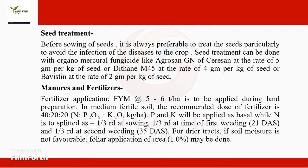For manures and fertilizer application: farmyard manure at 5 to 6 tons per hectare is to be applied during land preparation. In medium fertile soil, the recommended dose of fertilizer is 40:20:20 of NPK respectively.